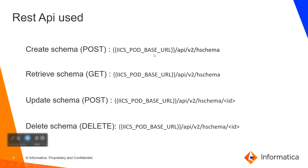For Create Schema, we take the base API URL along with /api/v2/hschema — this is the hierarchical schema endpoint. We use POST for creating and GET for retrieving all hierarchical schemas. To update a specific hierarchical schema, we use the same endpoint but pass the schema ID, using POST for update. For deleting, we pass the schema ID as well but use the DELETE operation.